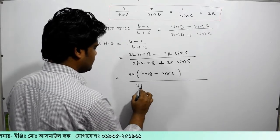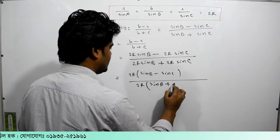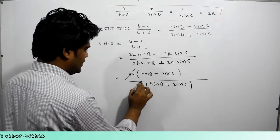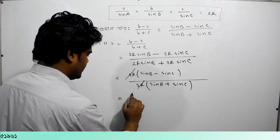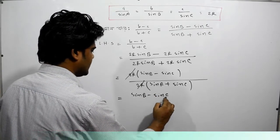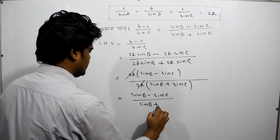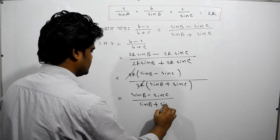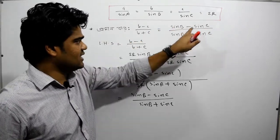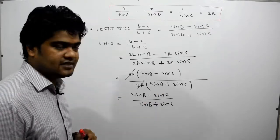So, we have to write 2R sin B plus sin C. So, we have to write 2R sin B minus sin C divided by sin B plus sin C. So, if we write down here, sin B minus sin C over sin B plus sin C.